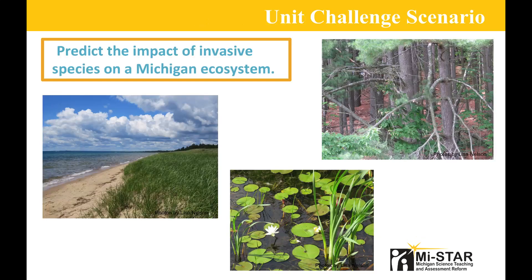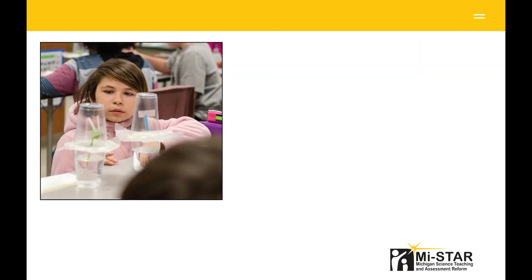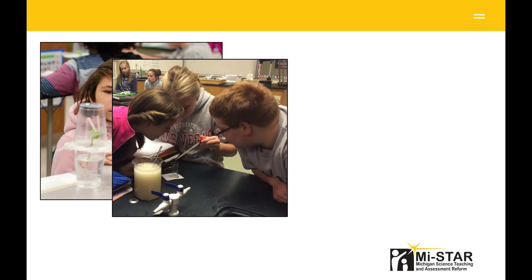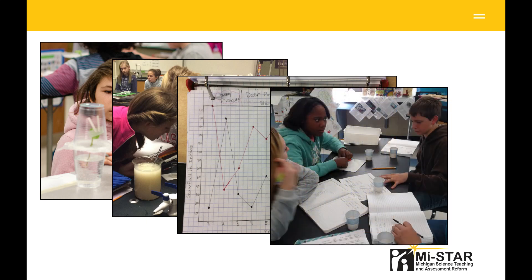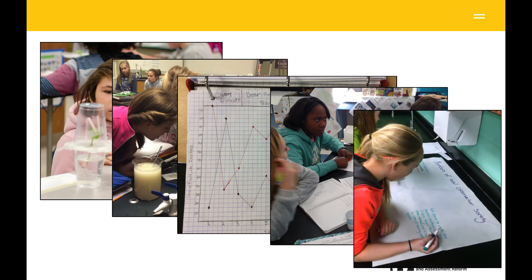In the 6.6 Unit Challenge scenario, students work to advise their local state legislator about how invasive species may affect the population of native species in various Michigan ecosystems. Student groups are assigned to one of six Michigan ecosystems, including white pine forest, wetland, or a part of Lake Michigan. Within each group, individual students first create a model to describe how a single species interacts with their group's ecosystem. Lesson by lesson, students conduct investigations and use data to make predictions on how a change in one ecosystem component affects the rest. By the end of the unit, student groups use their organism models to predict how the ecosystem may change when disrupted by an invasive species and record their explanation in a unit summary table.